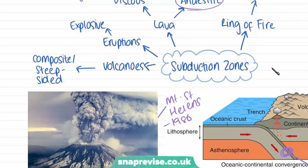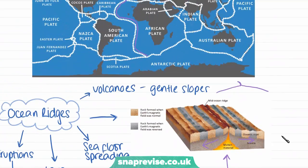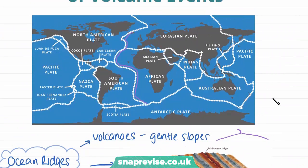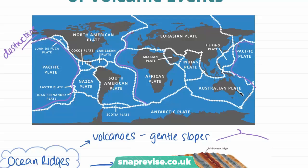These steep-sided volcanoes are found at destructive or subduction zones around the Ring of Fire. The Ring of Fire is the boundary that outlines the Pacific Plate, because this is a destructive boundary. It stretches all the way around the Pacific Plate. We have a lot of tectonic activity around these areas — lots of volcanoes, lots of earthquakes happening — and it's a very tectonically active zone.